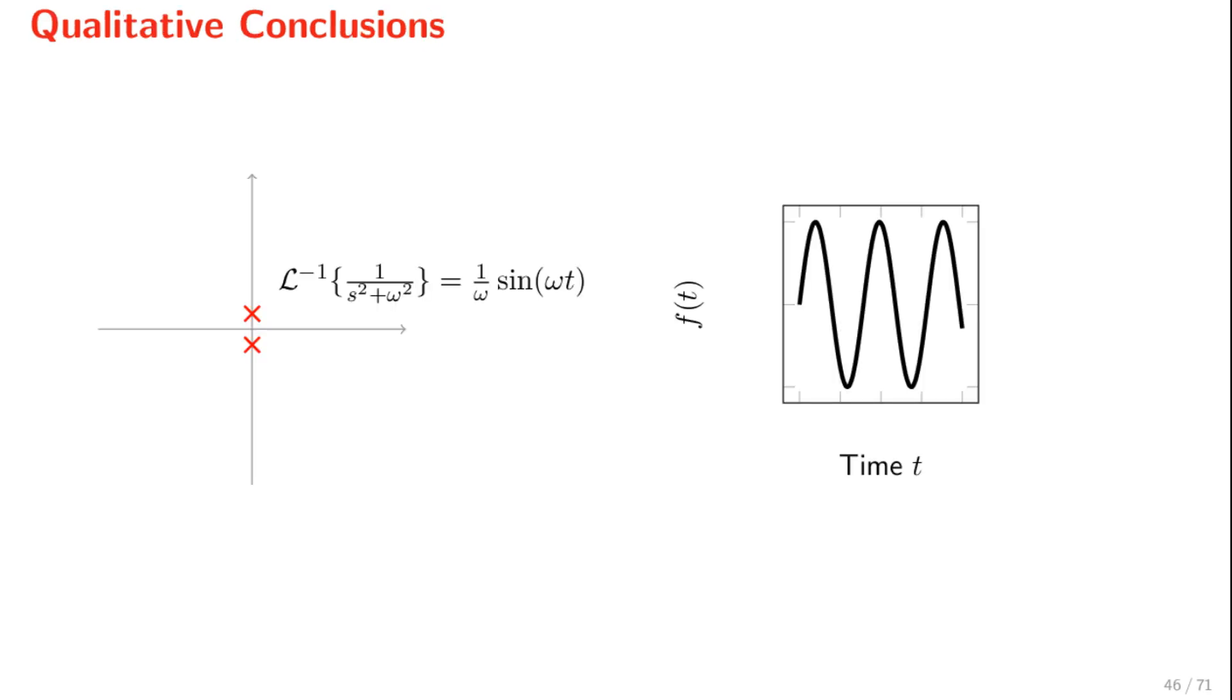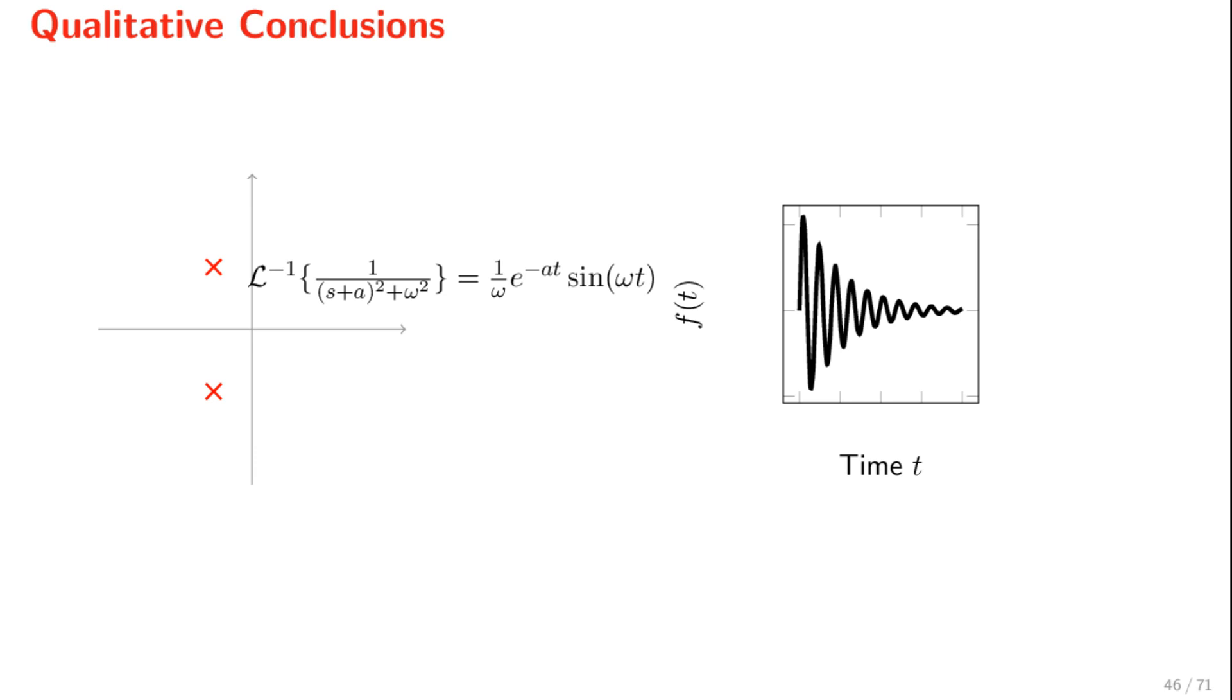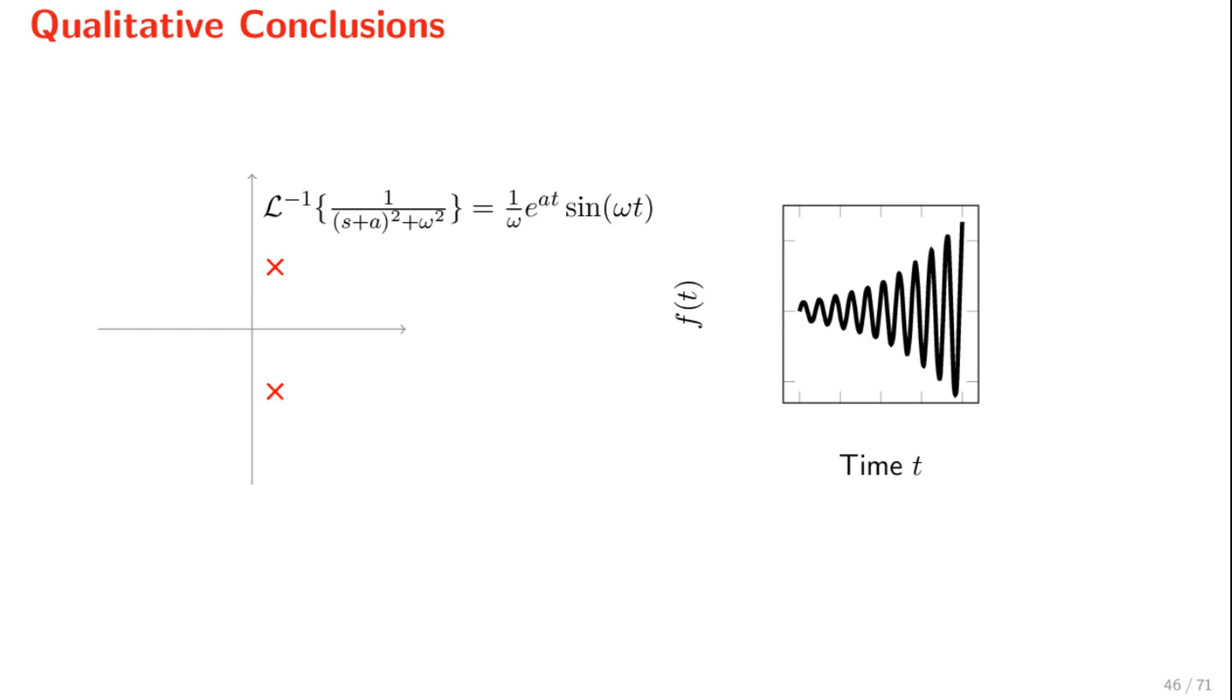Overall, those terms that involve purely imaginary poles give rise to sustained oscillations. The imaginary part determines the frequency of oscillation. If we move these poles to the left, we will obtain a diminishing oscillatory time function. The more negative the real part is, the higher the damping of the oscillation. On the other hand, if we move the poles on the right side of the complex plane, we will have a divergent and unbounded inverse Laplace transform.